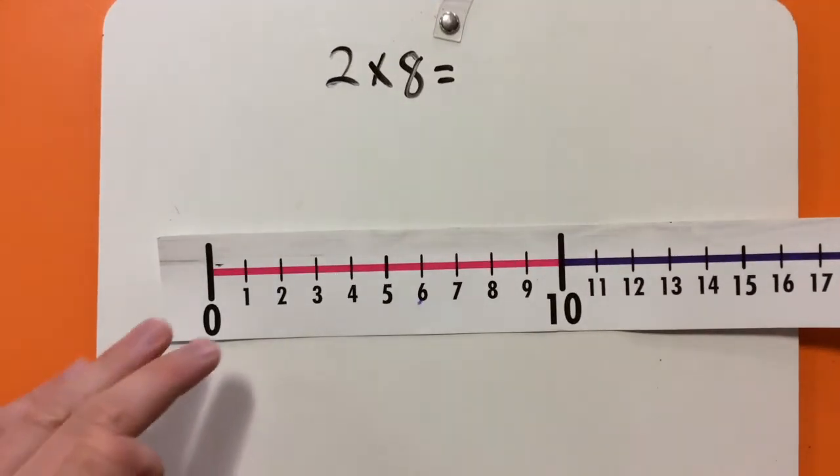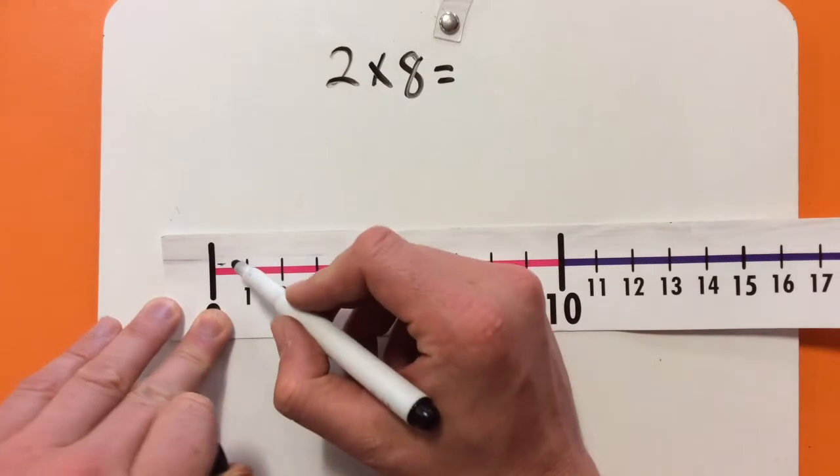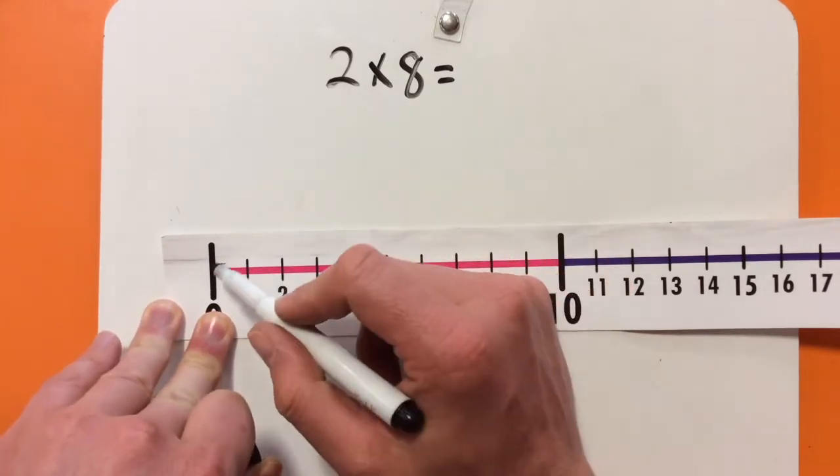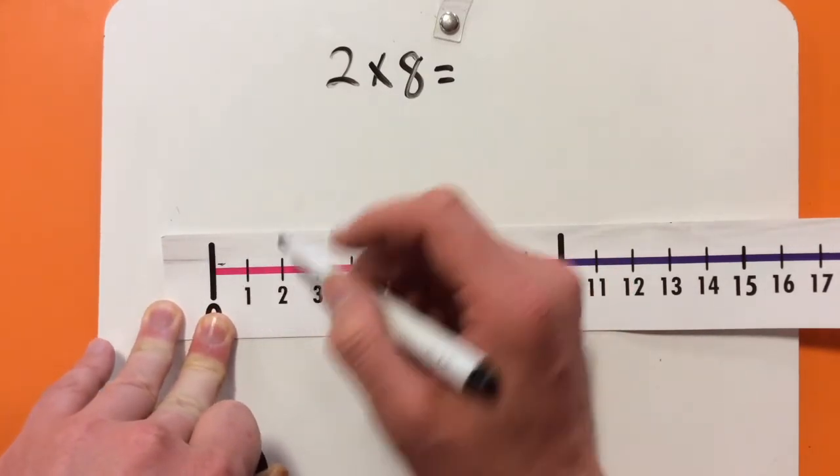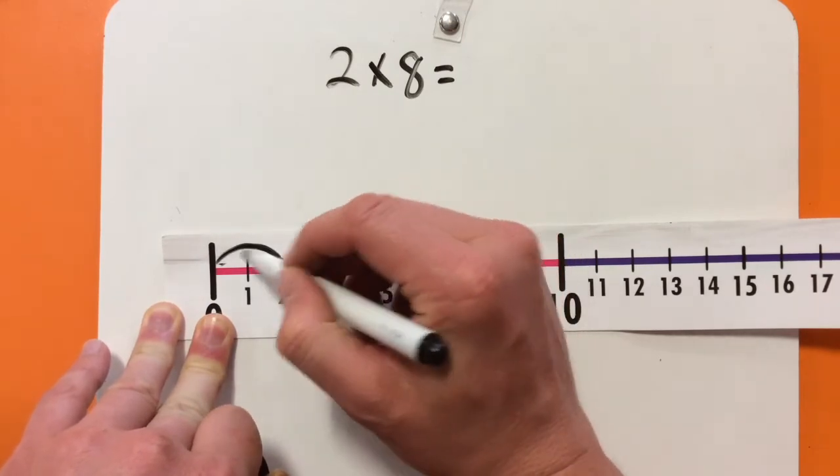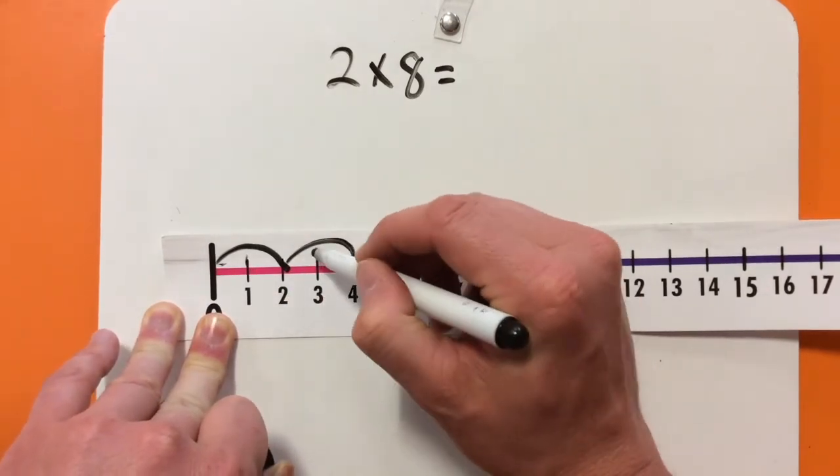For the last problem, let's start with the number line. 2 times 8, so we'll skip count by 2 eight times. So, that's 2, 4,